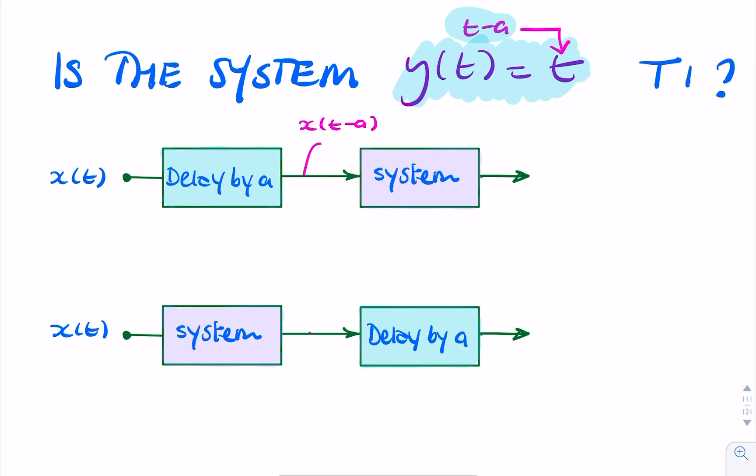But we need to replace t with t minus a. That's what happens whenever we delay the signal before entering it into the system. We replace t with t minus a. So the output will be t minus a, because a seconds have already passed.